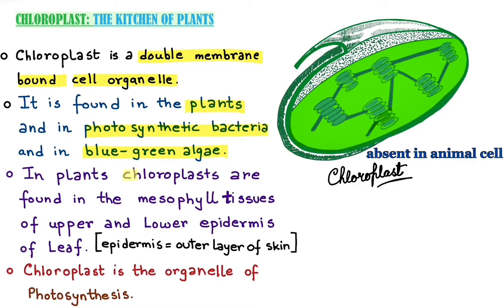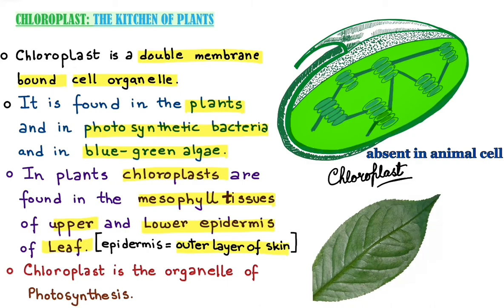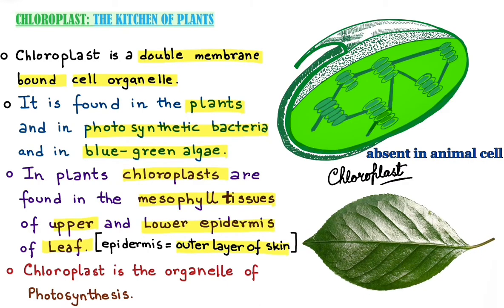In plants, chloroplasts are found in mesophyll tissues. These are tissues found in the upper and lower epidermis of the leaf. Epidermis means the outer layer of skin of the leaves — this is the upper epidermis of the leaf and this is the lower epidermis of the leaf.